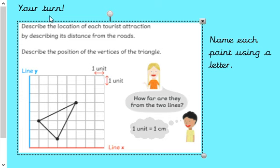Okay, your turn again. I want you to describe the position of the corners or the vertices of the triangle. You can see here that we have the blue line is line Y and the red line is line X and each unit is one centimeter. So, each square is one centimeter. So, I want you to look at each of these points and I would probably pick, you know, give them a name like A, maybe A, B and C. And I want you to tell me how far away from each of the two lines these points are. A bit like you did just now with the museum, the palace and the cathedral. Okay, press pause while you're having a go and press play when you're ready to come back and listen.